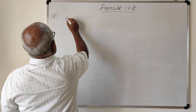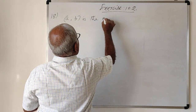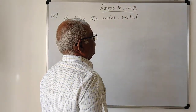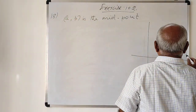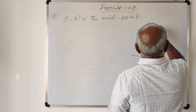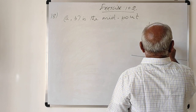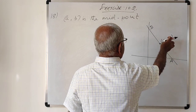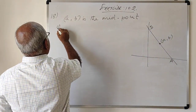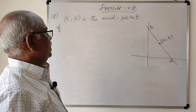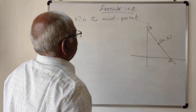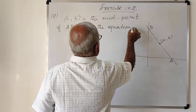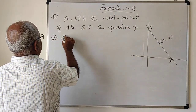Problem 18. Suppose (a, b) is the midpoint of the line intercepted between the coordinate axes. This is the line intercepted between the coordinate axes, and the midpoint of this line is given as (a, b). Show that the equation of the line is x/a + y/b = 2.